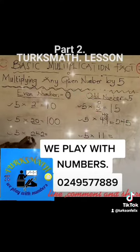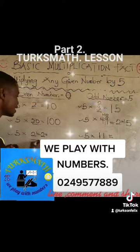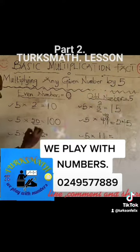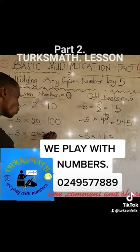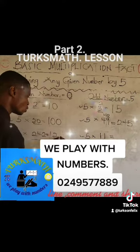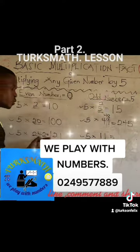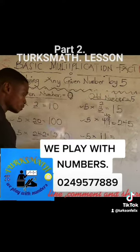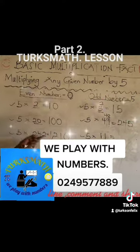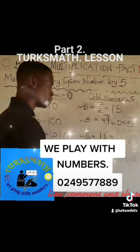Then you have 5 times 242. Divide the number — when you divide you get 1, 2, 1. Increase it with 0. So you get 1,210. Very simple.